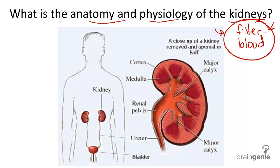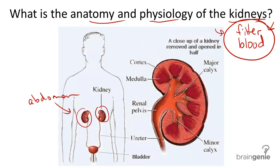We're going to take you from big to small, starting large. The kidneys are two bean-shaped organs located in the upper abdominal cavity, towards the back or the dorsal part of the body. These organs can be divided into three regions: the outer renal cortex, the inner renal medulla, and the renal pelvis.